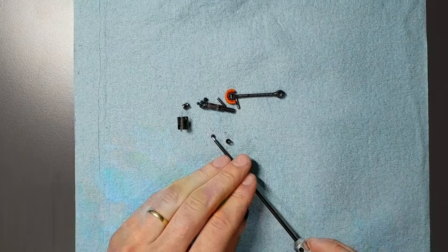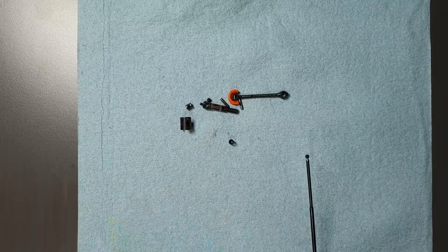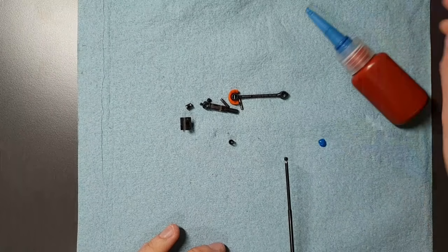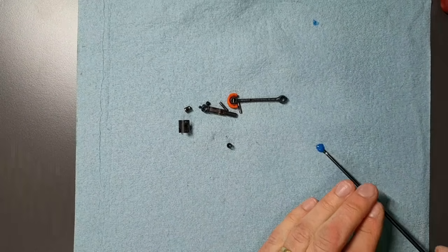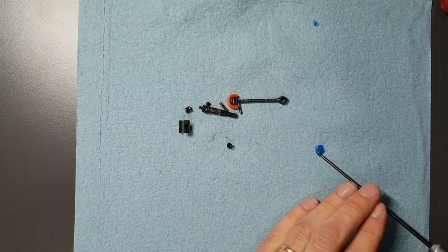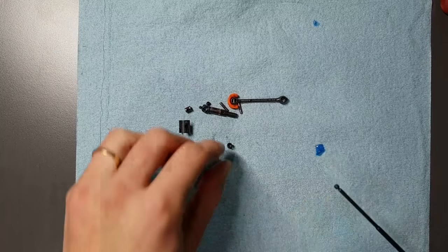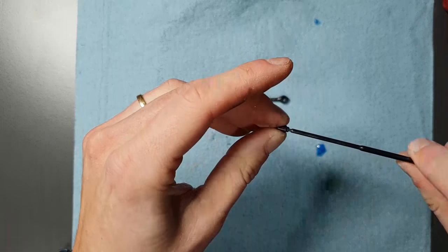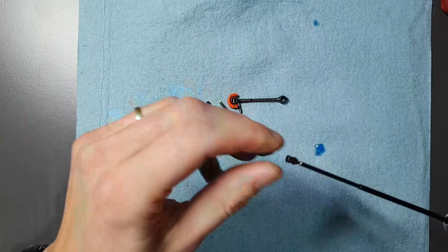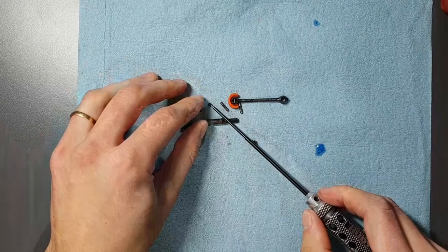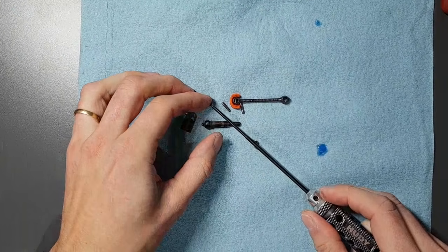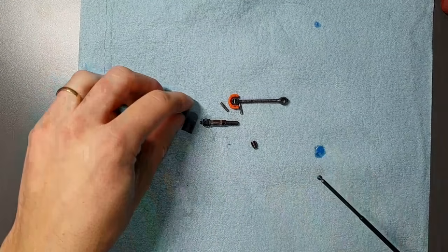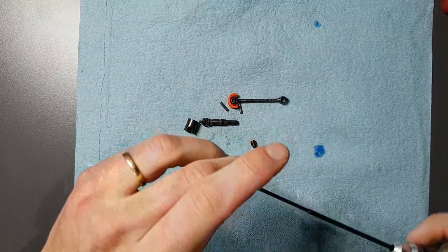So we start with the set screws. I'm gonna use a medium strength Loctite threadlock that I'm gonna apply to these screws. It's important not to use too much, because if you get threadlock onto the moving parts of the ECS, it's gonna make it bind up. So it's very important to not use too much. A little bit. You thread the screws into the couplings. Just add a little bit of threadlock onto the set screw. Put it in there. Those are ready.